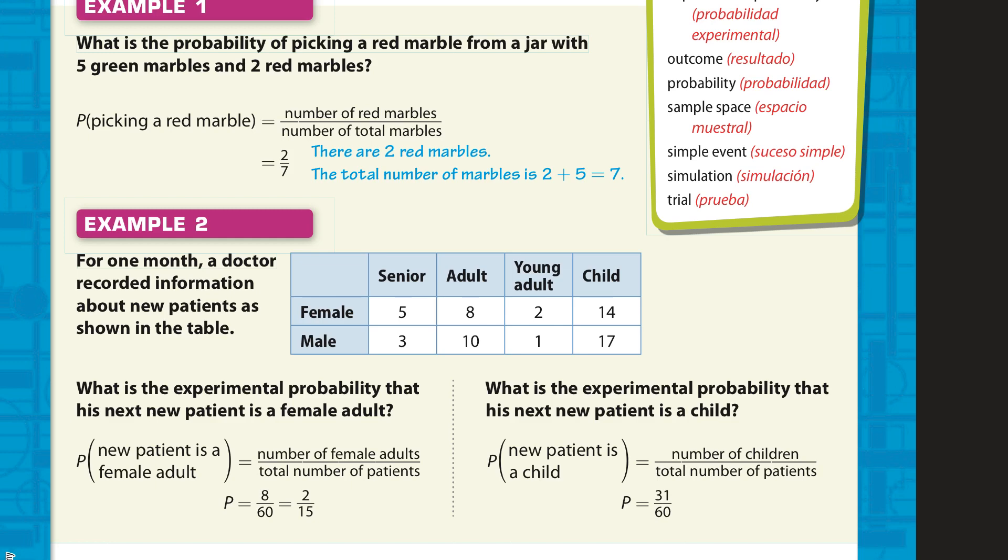So, what's the probability of picking a red marble from a jar of 5 green and 2 red? Well, P stands for probability, and probability of picking a red marble. The number of red marbles is 2 from our scenario, and the total number of marbles is 7. So, 2 out of 7.